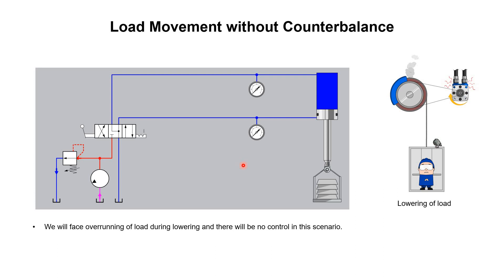A similar situation is shown in this hydraulic circuit, where this cylinder is being used for the raising and lowering of a load. Here we have a direction control valve. If we want to raise the load, we change the direction. From the hydraulic pump, fluid will move in the selected direction, come to this point, and start moving the hydraulic cylinder upward — so we will be able to raise the load. This is a normal operation.